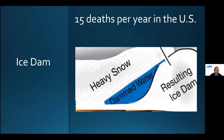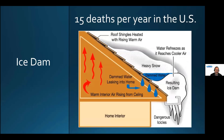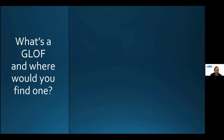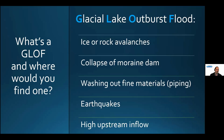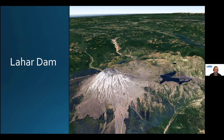If you Google ice dams, you'll find that in the US alone there are 15 deaths per year related to ice dams — though that refers to roof ice dams, not glacial ones. The concept is similar: melt water builds up, an ice dam forms downstream, and failure can result in fatalities. The term we want is GLOF — glacial lake outburst flood. These can be triggered by ice or rock avalanches, moraine dam collapse, piping through fine materials, earthquakes, or high upstream inflows.